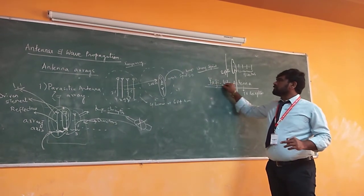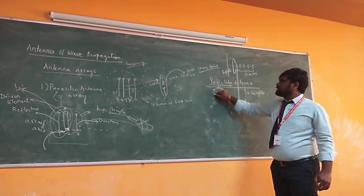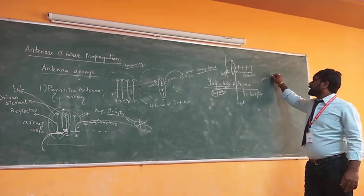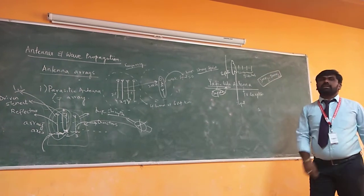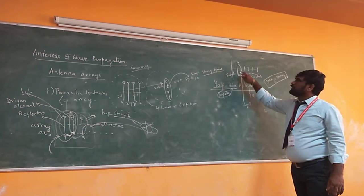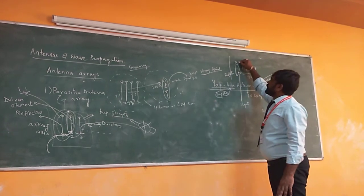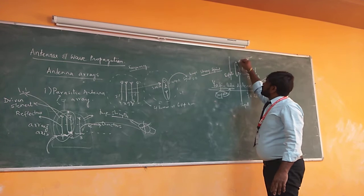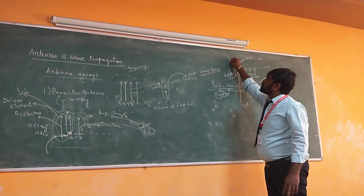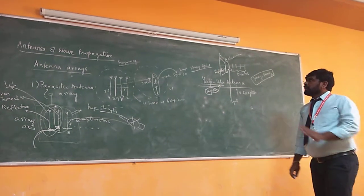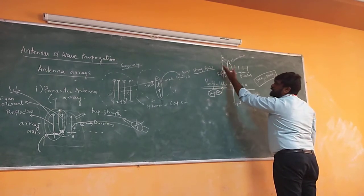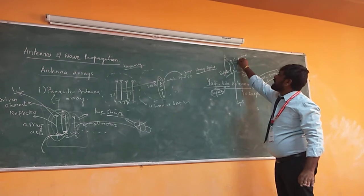The Yagi-Uda antenna is named after a Japanese scientist. It can receive signals from 3 MHz to 30 MHz, with better signal reception in that range. The driven element takes input and is made of aluminium. The driven element radiates electromagnetic waves towards the reflector on one side only — the radiation does not come on the other side.